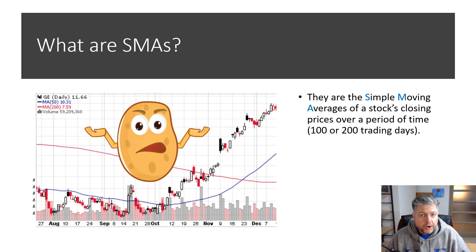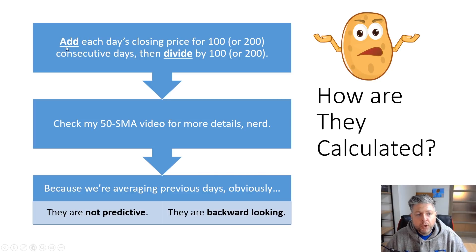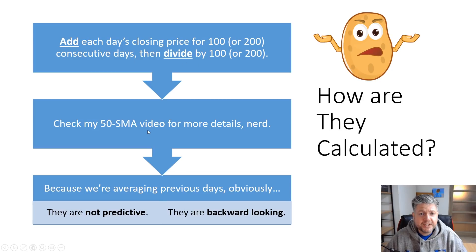Just a quick review — what are SMAs? They're the simple moving averages of the stock's closing prices over a period of time. In the case of this video, we're going to be talking about 100 days or 200 days. How are they calculated? We add each day's closing price for 100 or 200 closing days, then divide by 100 or 200. If you want more details on the math, go ahead and check out my 50-day SMA video — I break it down in a lot more detail.